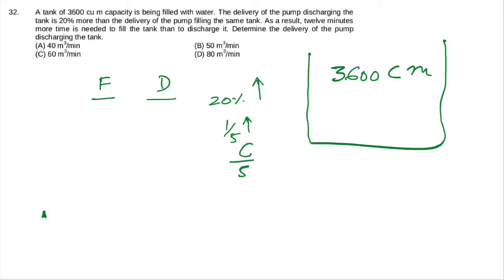So if filling capacity is 5, then discharge capacity would be 6. This is efficiency. If you can see, the time is just reverse: time would be 6 or 5. The time difference is one unit.